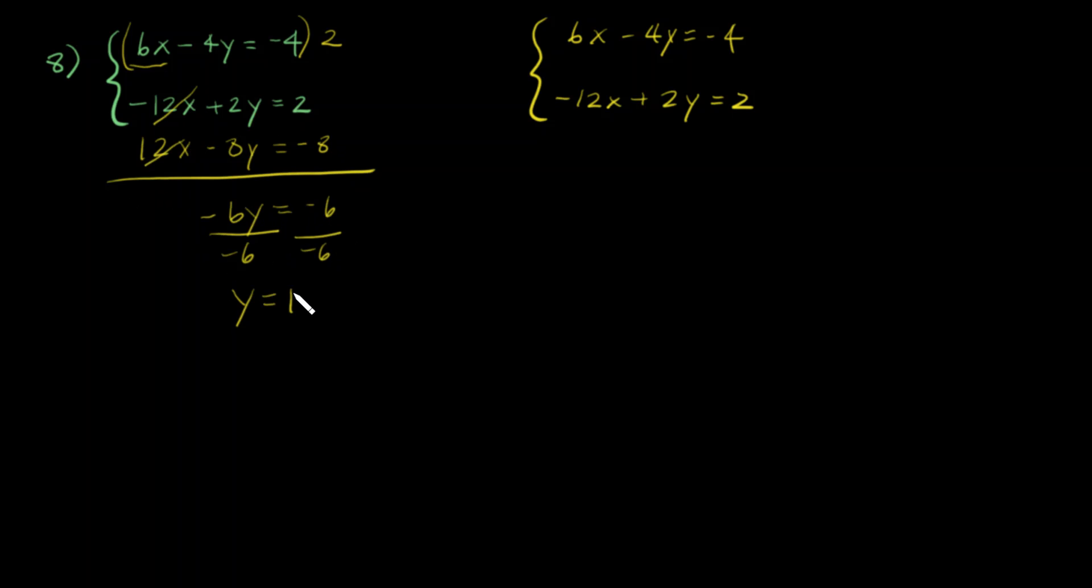I can put that back into my first equation, so I get 6x - 4(1) = -4, and 6x - 4 = -4. We're gonna add 4 to both sides.